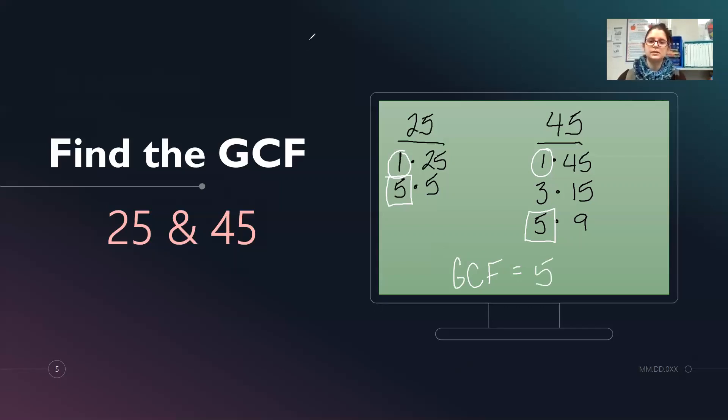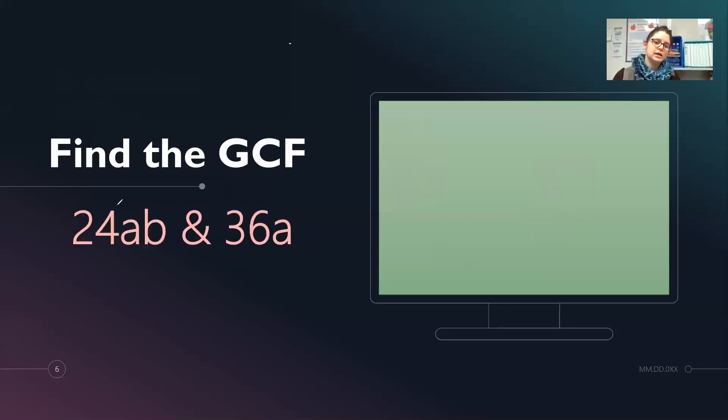Let's look at another example of finding factors. We're going to factor 24AB and 36A. So we're going to list the factors of 24. That's 1 times 24. This is an even number. So I know 2 will work. 2 times 12. 3 times 8. 4 times 6. Next is 5. I know 5 times 5 is 25. That's just too much. So 5 won't work. After 5 is 6. I've already used 6. So that's all of my factors.